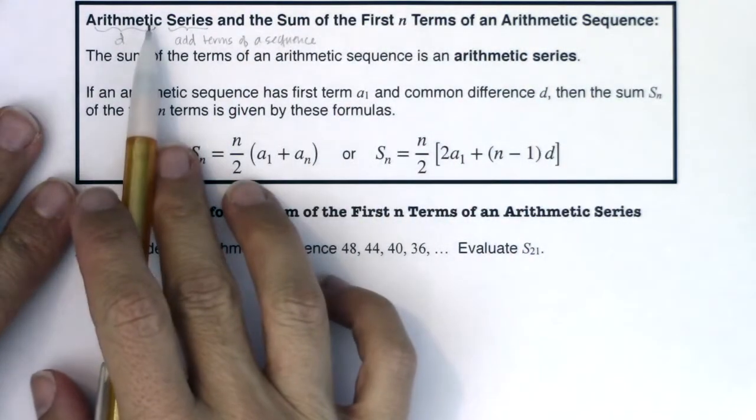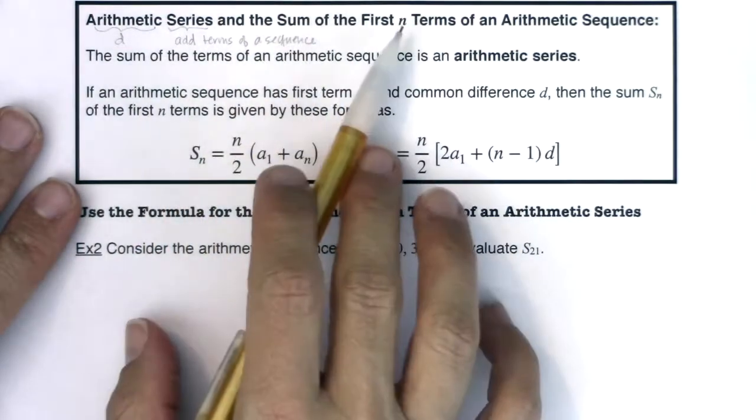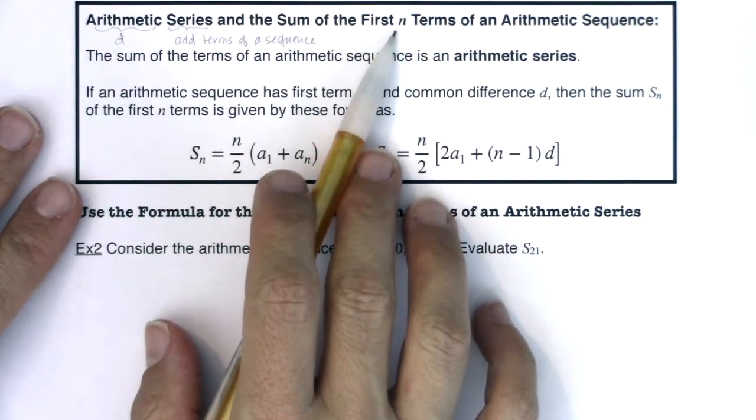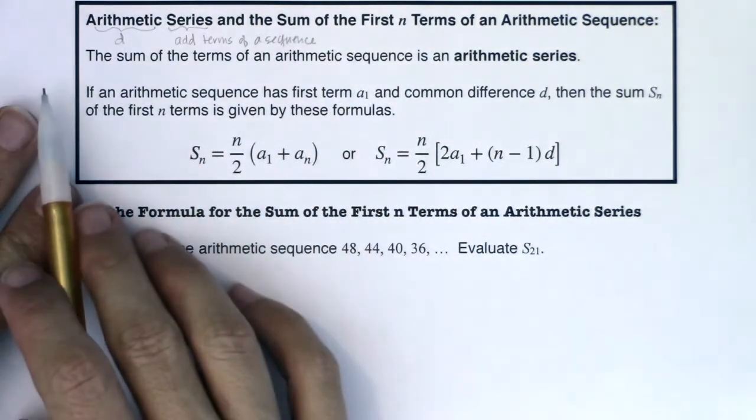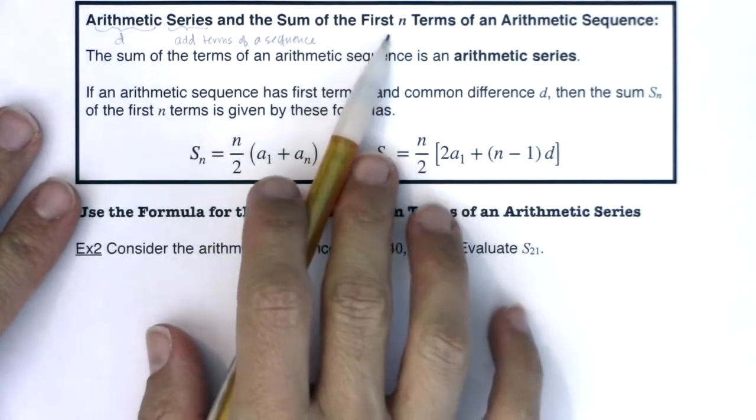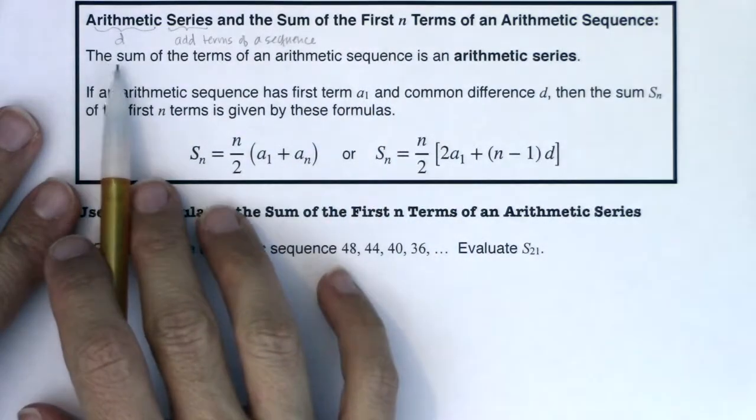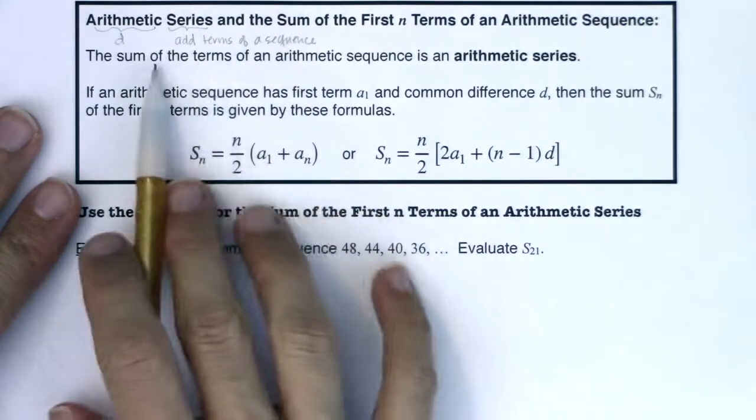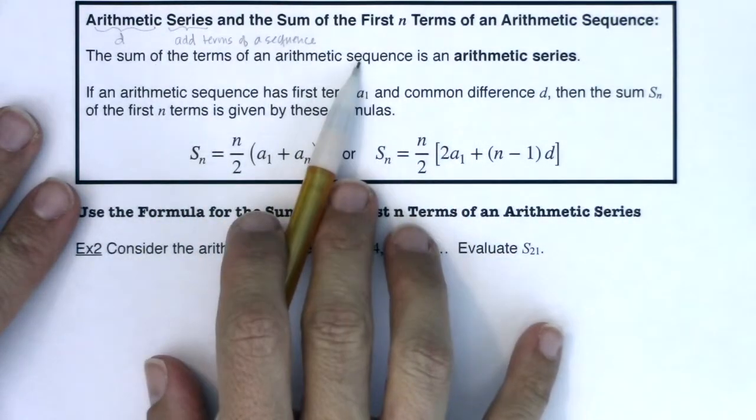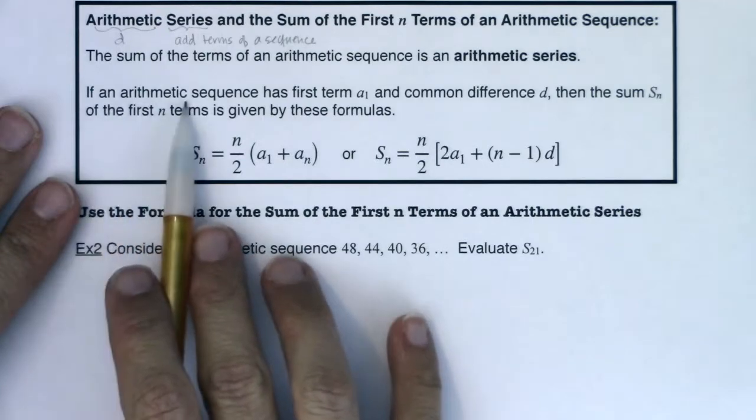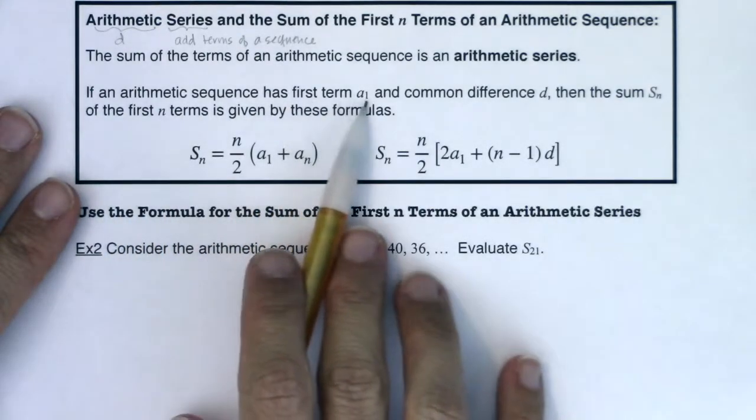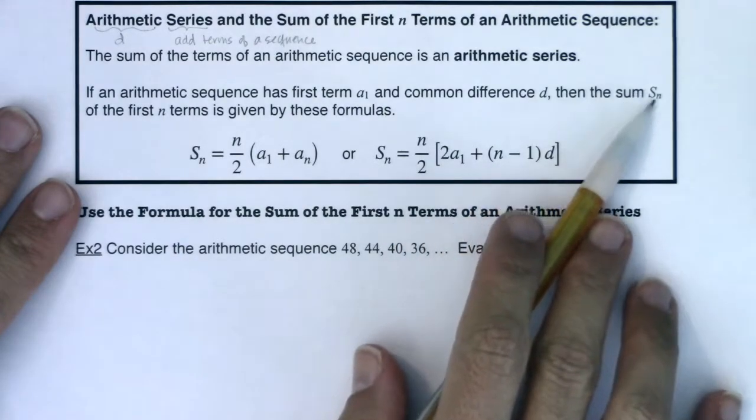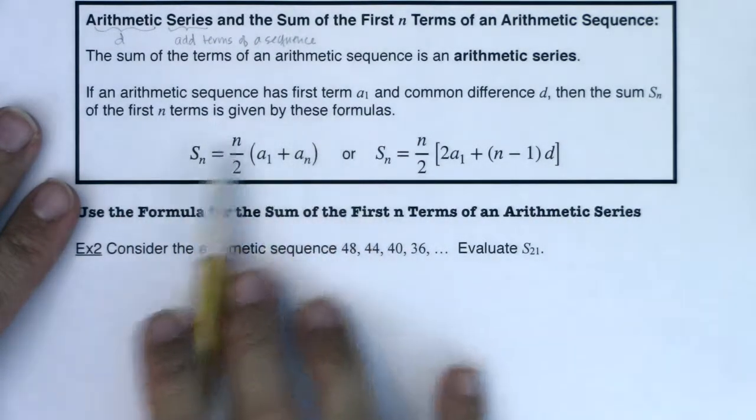Alright, so the arithmetic series and the sum of the first n terms of an arithmetic series, so the first six terms, seven terms, two terms, 25 terms, it doesn't matter, but it's a finite number of terms, it's not infinite. So the sum of the terms of an arithmetic sequence is an arithmetic series. If an arithmetic sequence has first term a₁ and common difference d, then the sum s_n of the first n terms is given by these formulas.